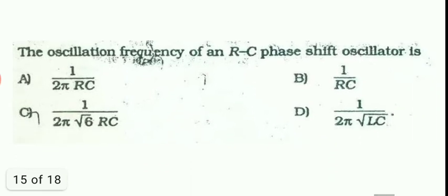The oscillation frequency of an RC phase shift oscillator is. It is also a direct question. It is f0 is equal to 1 by 2 pi root 6 RC. So direct question. For other oscillators also, we must know the frequency of oscillation. That is very important.